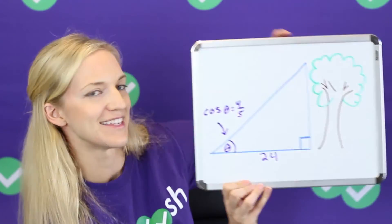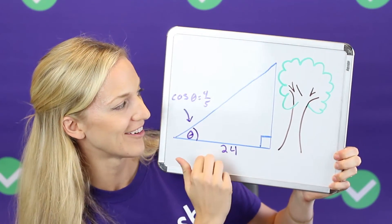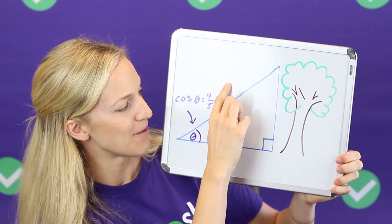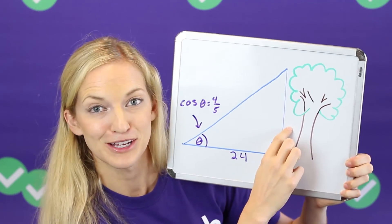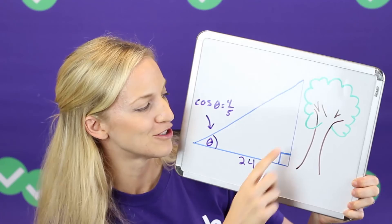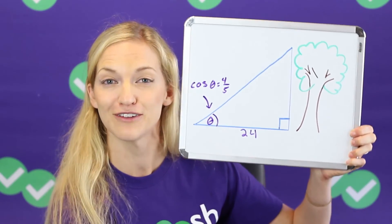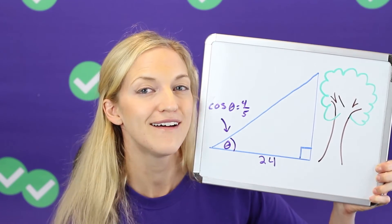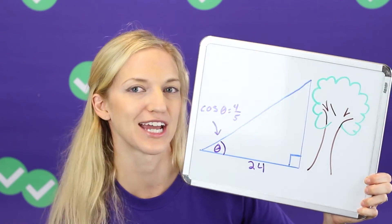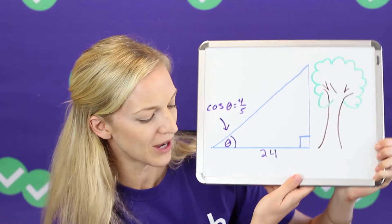If you're sharp, you'll notice this is a 3-4-5 triangle: the ratio of adjacent to hypotenuse is 4 to 5, so the opposite must be 3. You could use a proportion directly from that. You'll find 3-4-5 triangles and other Pythagorean triples appearing a lot in trig problems on the ACT, so watch out for them in your trig ratios.